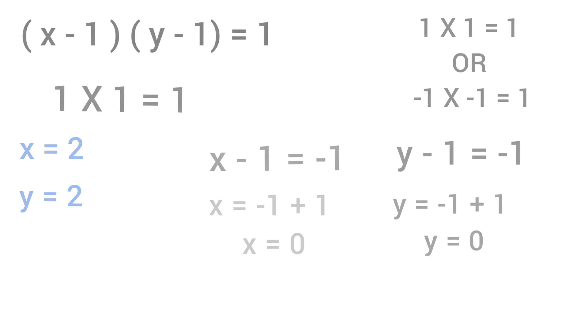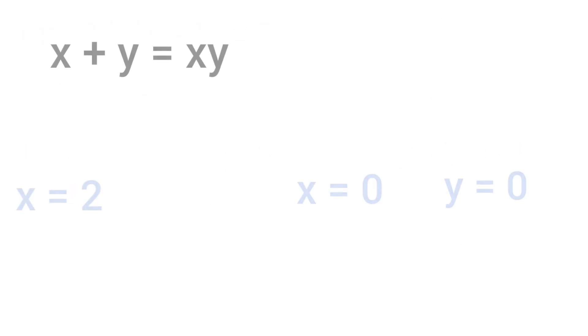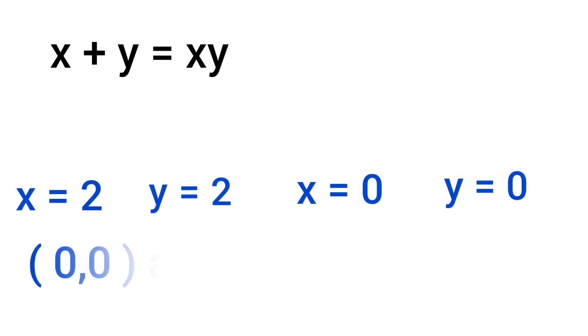So we can say that (0, 0) and (2, 2) are the only two pairs of integers that will satisfy the equation x plus y equals xy.